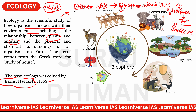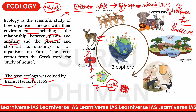Biosphere मतलब जहाँ पर life है। पूरी earth एक biosphere की तरह काम करती है। Life की सबसे छोटी form है cell। Cells मिलकर organs बनाते हैं, organs मिलकर एक individual बनाते हैं जैसे human body या एक deer। जब deer के साथ और deer इकठ्ठे हो जाएं तो वो population बन जाती है।